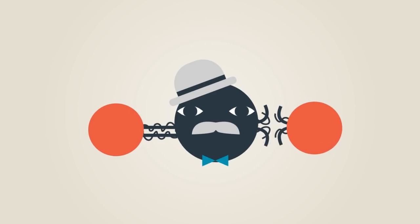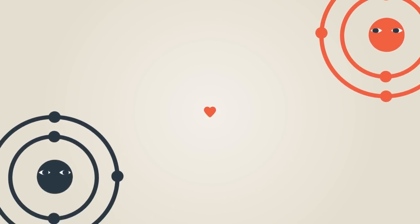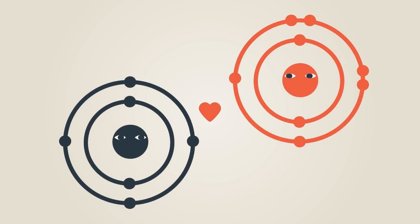Its strong double bonds make it very stable, and so whenever there are stray carbon and oxygen atoms flying about, they love to get together and form carbon dioxide.